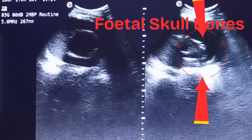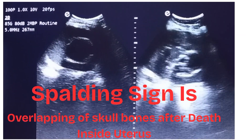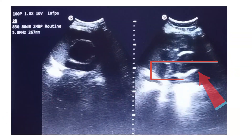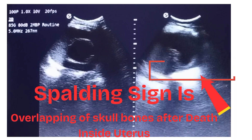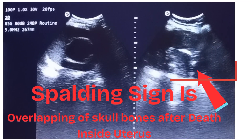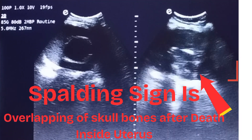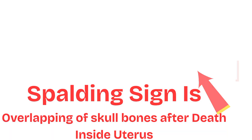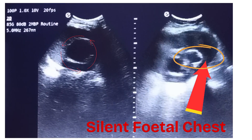A very early sign of intrauterine fetal death is Spalding's sign. Spalding's sign is the overlapping of skull bones after intrauterine fetal death. Here you can also see the silent fetal chest.